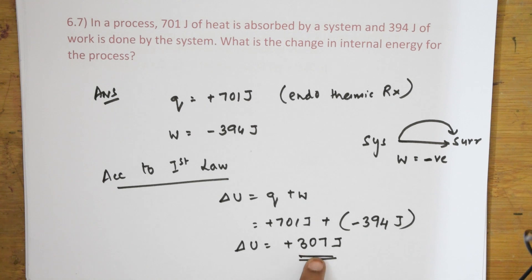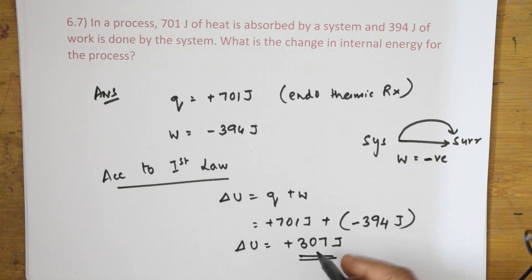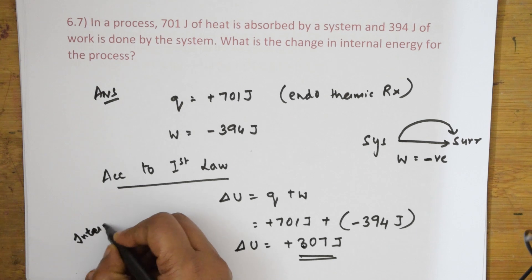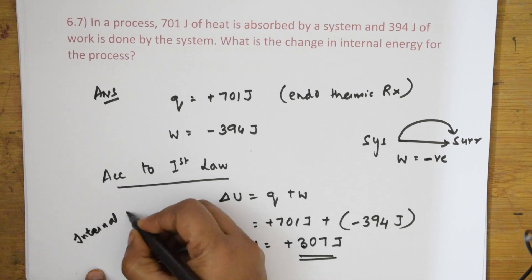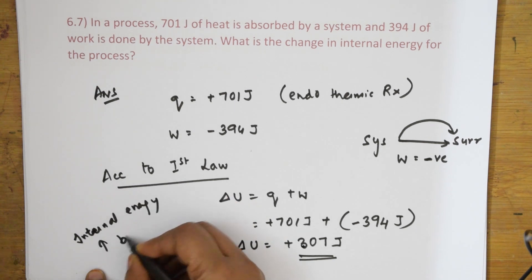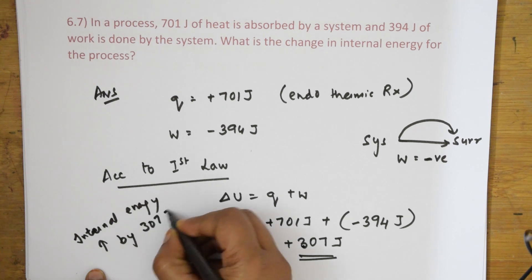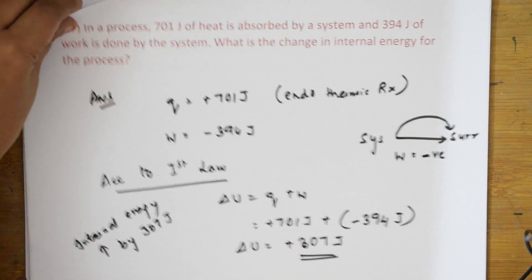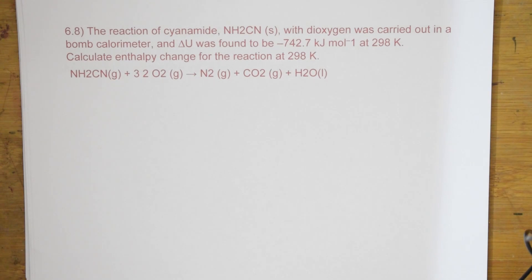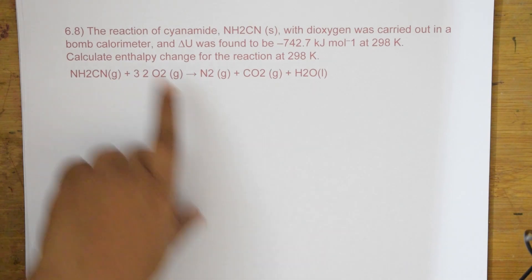The internal energy of the system increases by 307 joules, according to the first law. That's your numerical for question 6.7. Let's now see question 6.8.